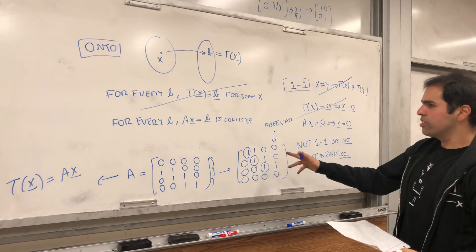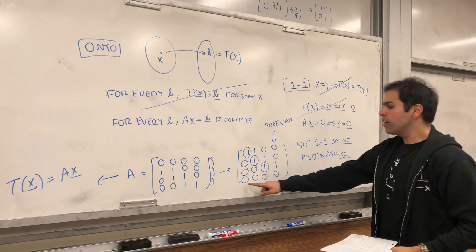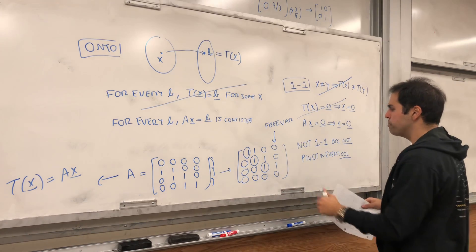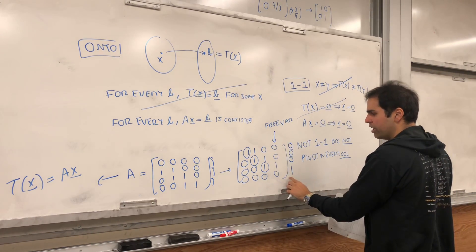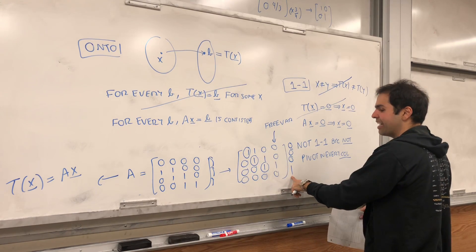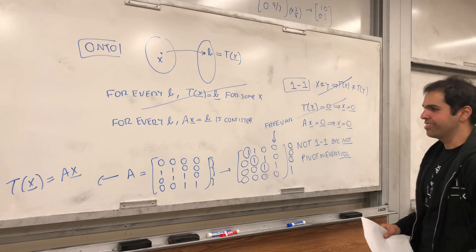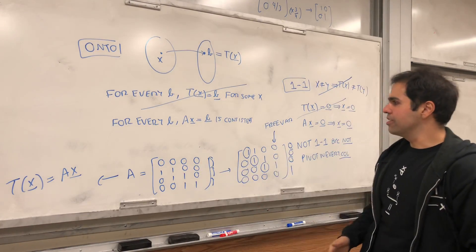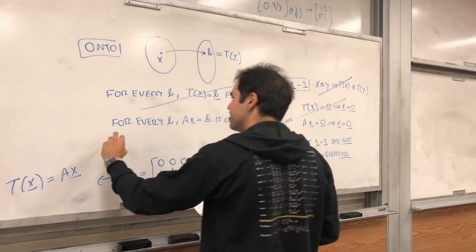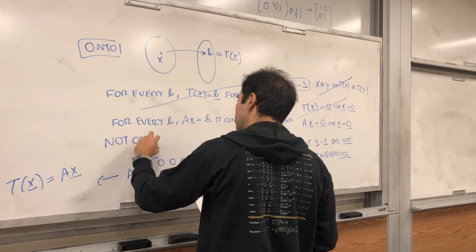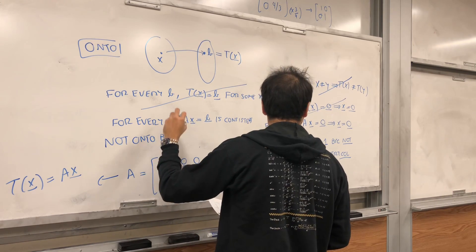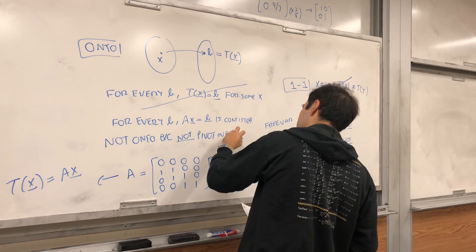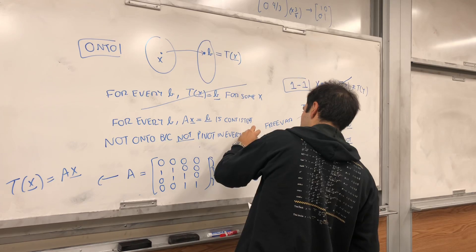And, well, the question is, is this consistent for every b? Well, turns out no, because notice there's not a pivot in every row. So, you could have b being like something like 0,0,0,1, and transform it back, and you get that it's not always consistent. So, I think in this case b would be 1,0,0,0, and you see it's not always consistent. So, the point is not onto, because there's not a pivot in every row.